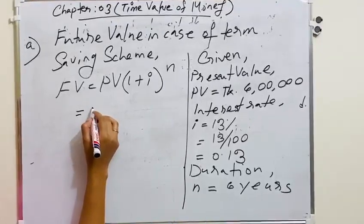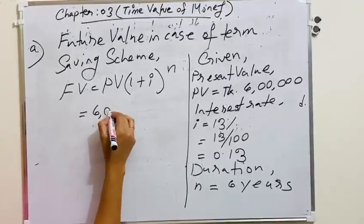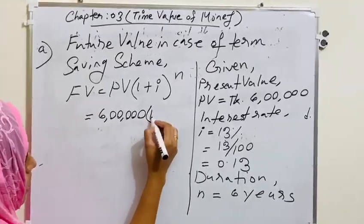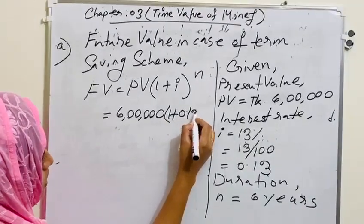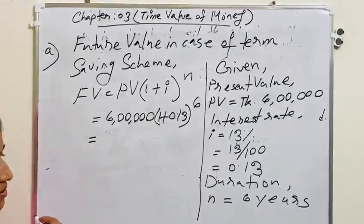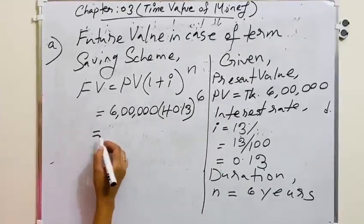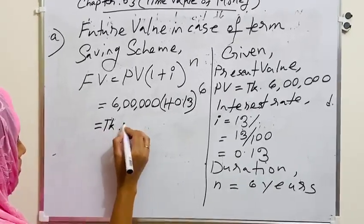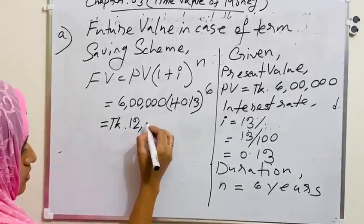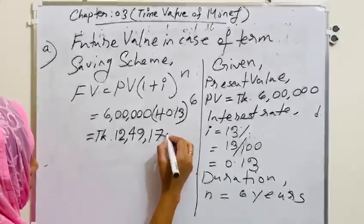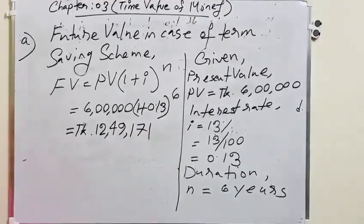So, FV equals to 6 lakh into 1 plus 0.13 to the power 6. FV equals to, we will get 12 lakh 49,171.